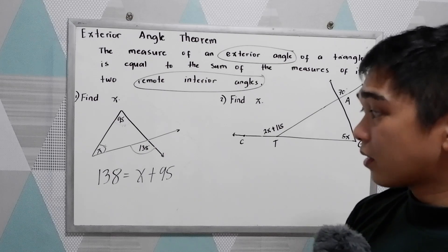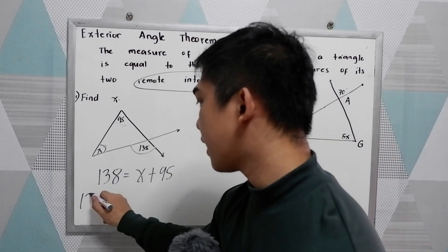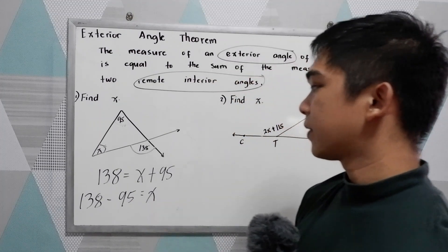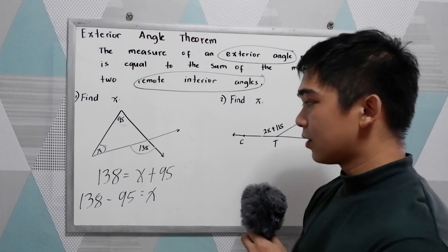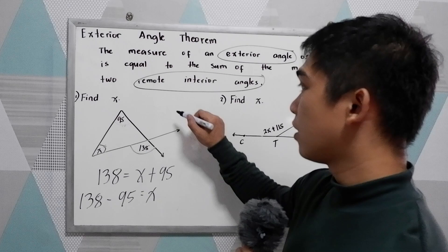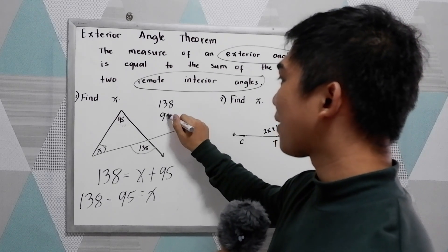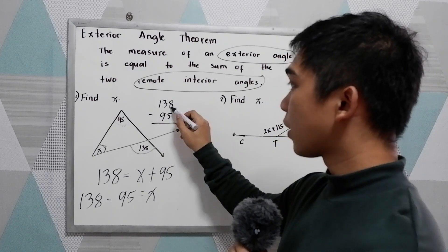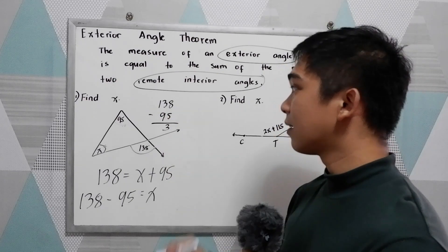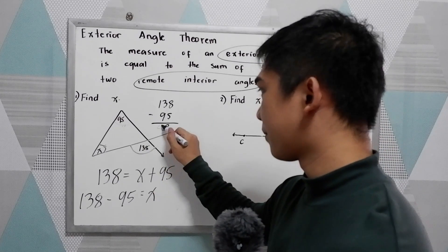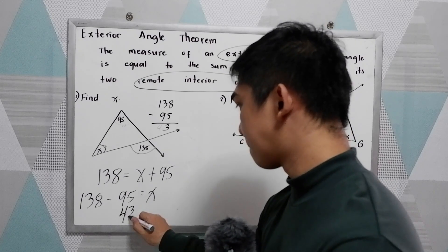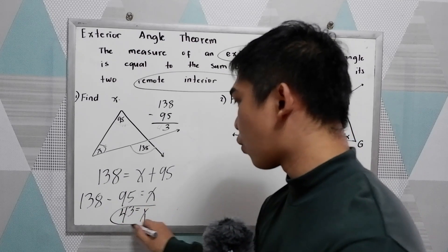Now we need to get the value of X. So 138 minus 95 is equal to X. Now subtract. 138 minus 95 would be the value of our X. So 138 minus 95, that is 3. 13 minus 9: 10, 11, 12, 13, so 4. So 43 will be our X.